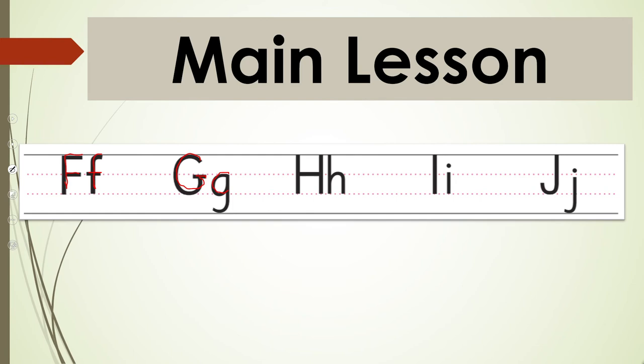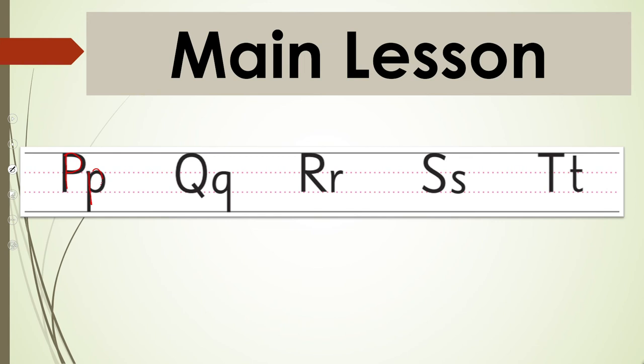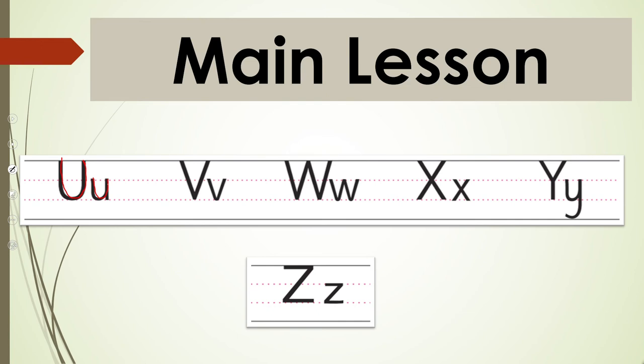The alphabets. Then it is F, f. G, g. H, h. I, i. J, j. K, k. L, l. M, m. N, n. O, o. P, p. Q, q. R, r. S, s. T, t. U, u. V, v. W, w. X, x. Y, y. And Z, z.